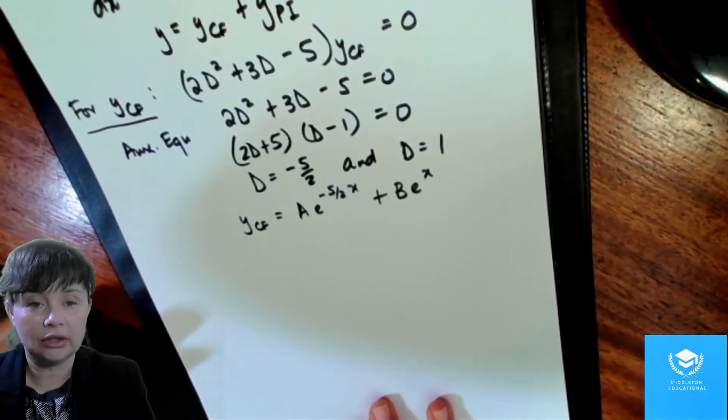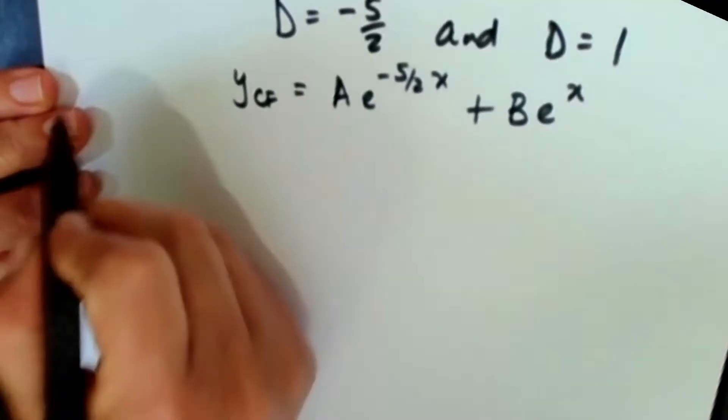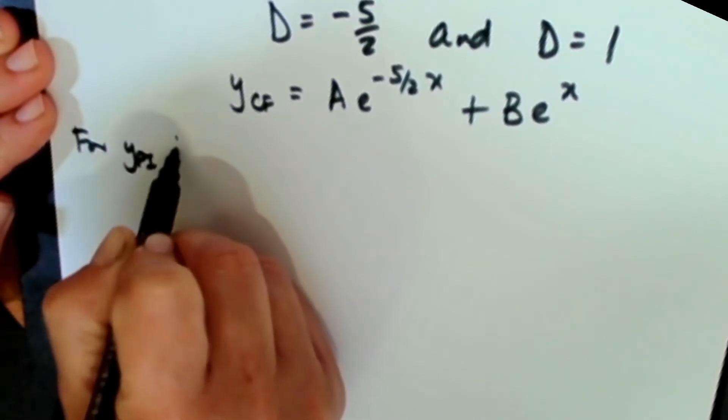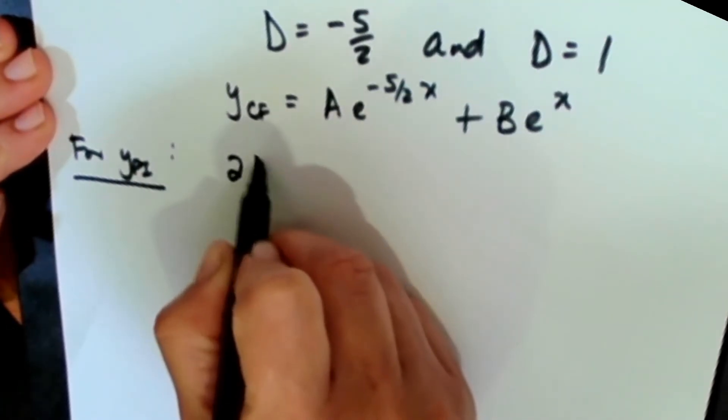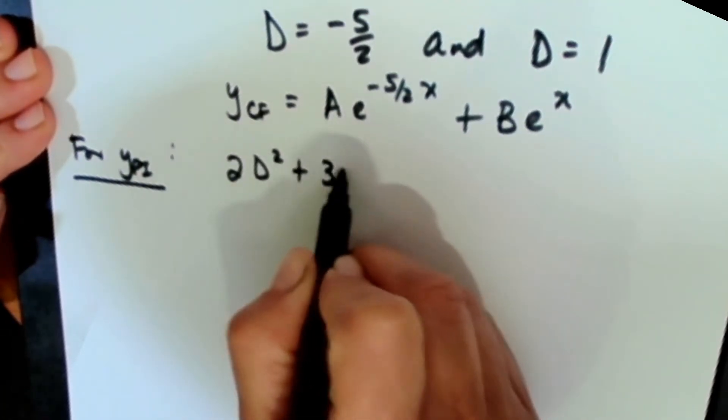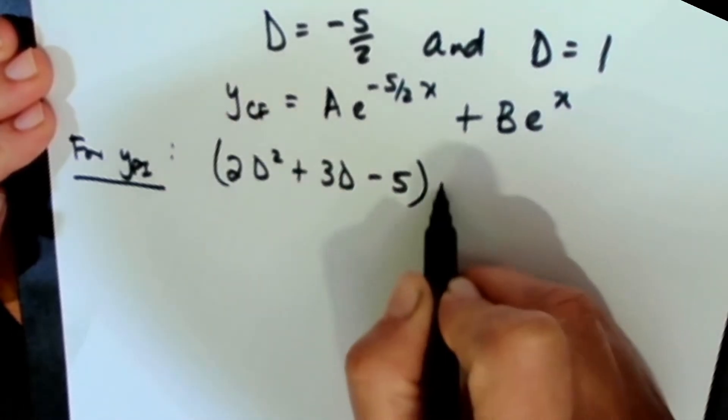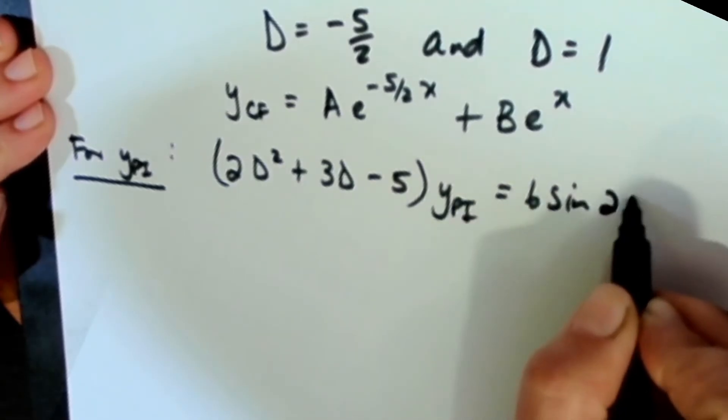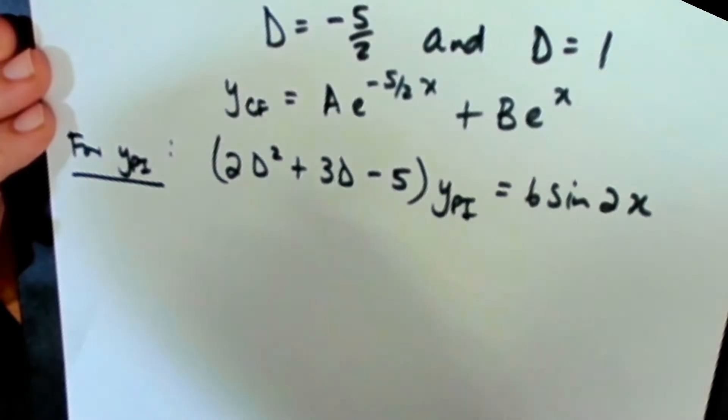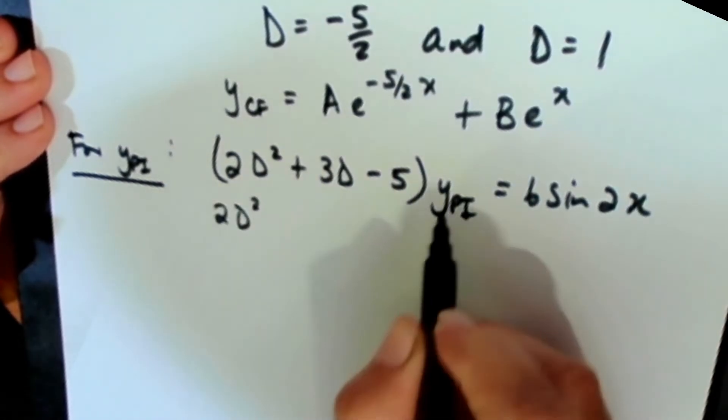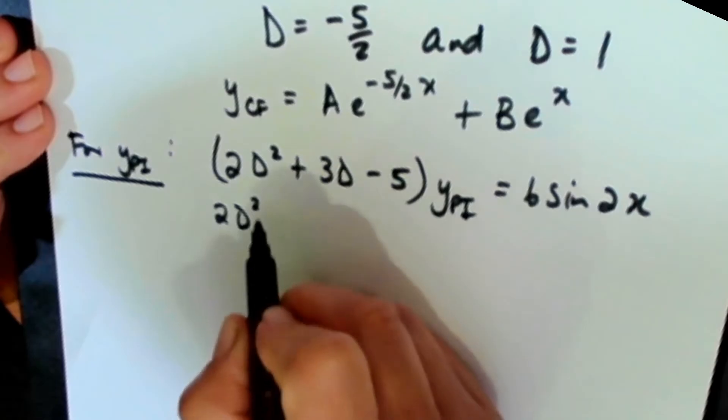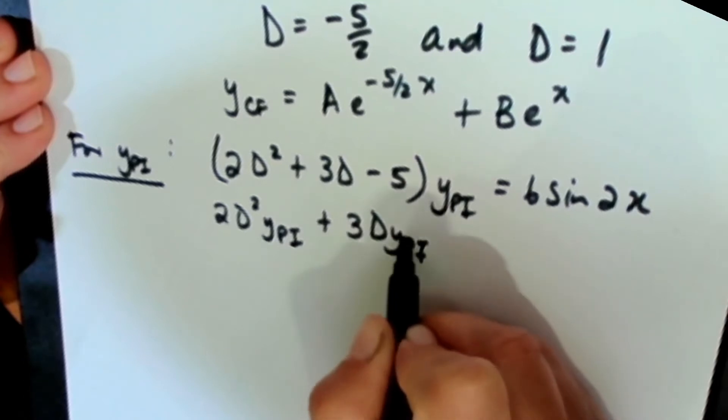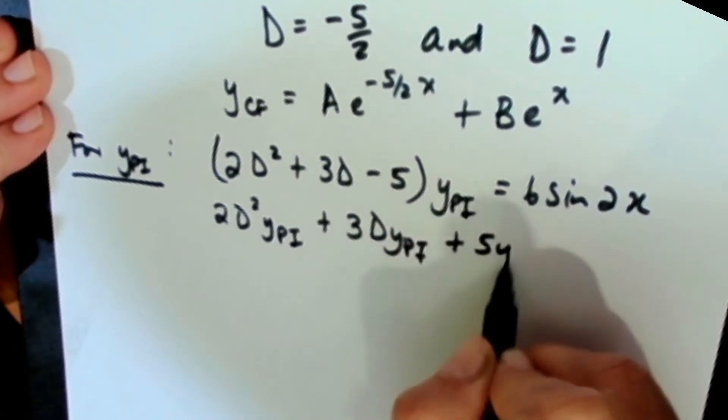So we've got our complementary function. Now let's have a look at our particular integral. So for ypi, we know that you can write the equation like this, 2d squared plus 3d minus 5 times ypi, and that has to be equal to 6 sine 2x.